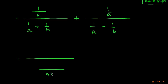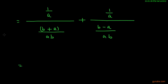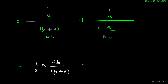If we take LCM in the denominator, it will be ab. This value will become b plus a, and here is 1 over a. And here is b minus a over ab. Now we can write this expression like: 1 over a, into ab over b plus a.